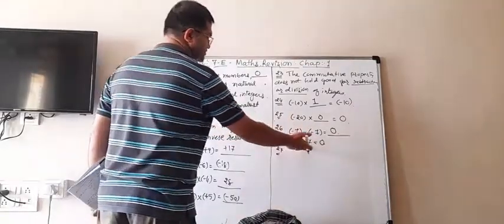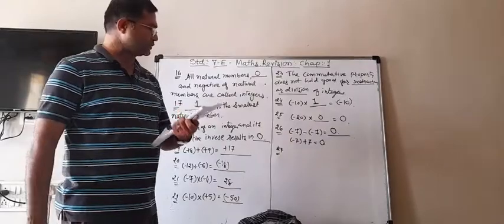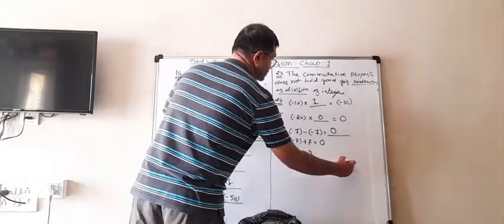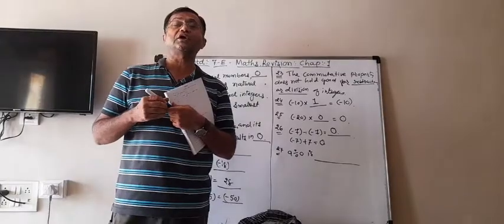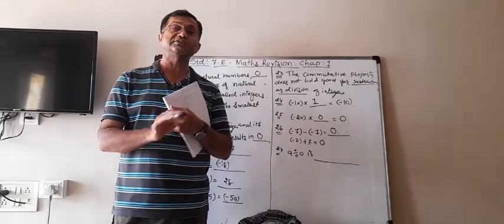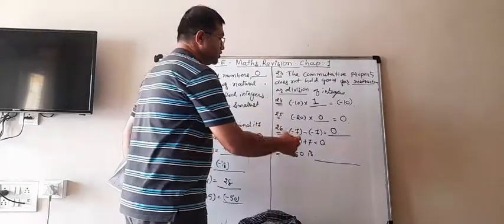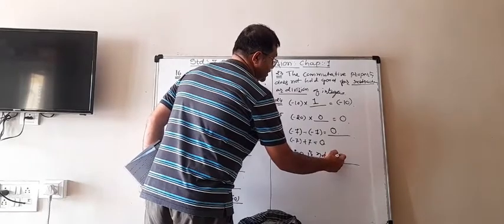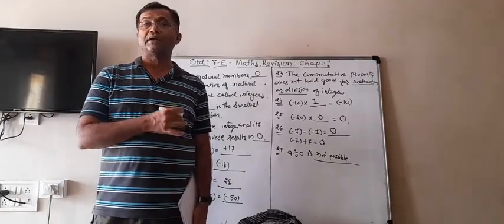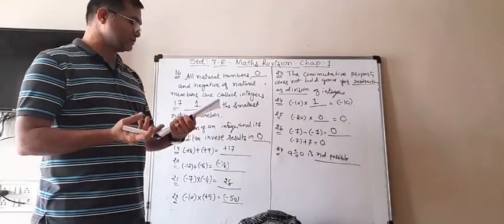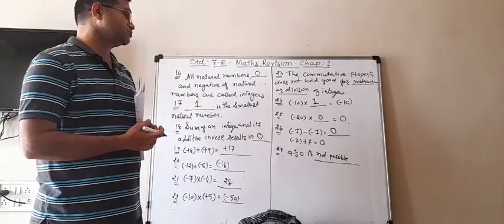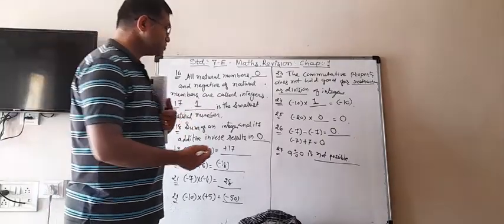Blank 27: a ÷ 0 = blank. Most students will write 0, but division by 0 is not possible — it is not defined. You can write 'not possible' or 'not defined.' We cannot divide any number by 0, so the answer is 'not possible.'